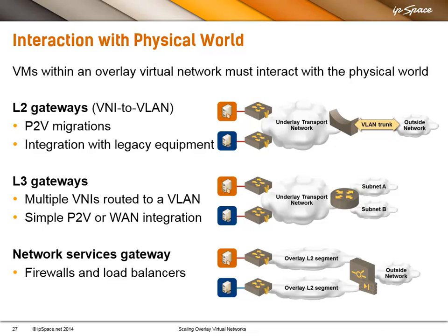Or you are offering transition services — for example, you're a co-lo facility with old customers who have physical servers in their own cages, and now you're offering them VM-based service. You have to provide connectivity between their physical cage and their overlay virtual network, and sometimes they want to retain the IP addressing, which means you have to provide a VLAN — so you need a Layer 2 gateway. Sometimes you have multiple segments that are routed to an outside world, so you need Layer 3 gateways.